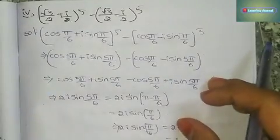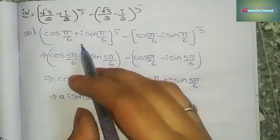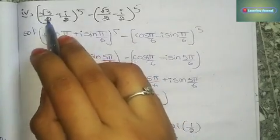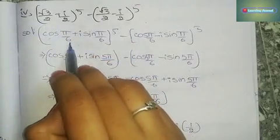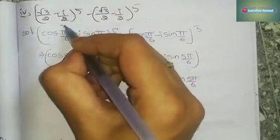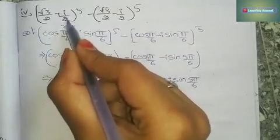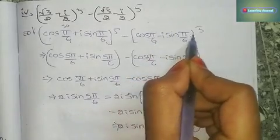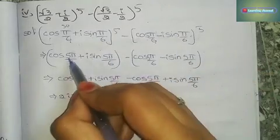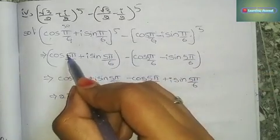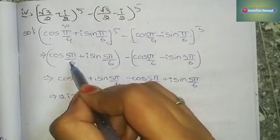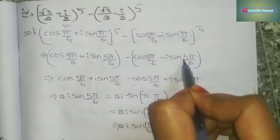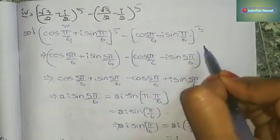In the fourth problem, we have two expressions. Write √3/2 = cos(π/6) (that is cos 30°) and 1/2 = sin(π/6). So the expression is (cos(π/6) − i sin(π/6))^5. From De Moivre's Theorem, write cos(5π/6) + i sin(5π/6) minus cos(5π/6) − i sin(5π/6).